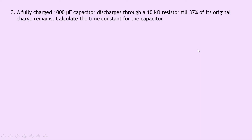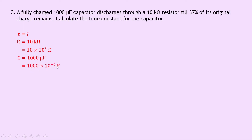Question 3: a fully charged 1000 microfarad capacitor discharges through a 10 kilohm resistor until 37% of its original charge remains. Calculate the time constant. R = 10 × 10³ Ω, C = 1000 × 10⁻⁶ F. Using τ = RC: 10 × 10³ × 1000 × 10⁻⁶ gives a final answer of 10 seconds.